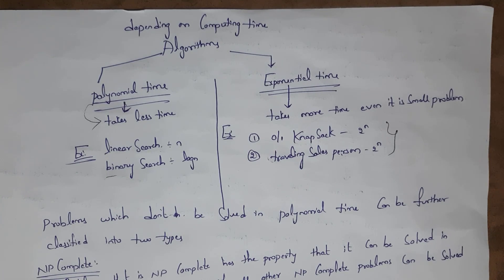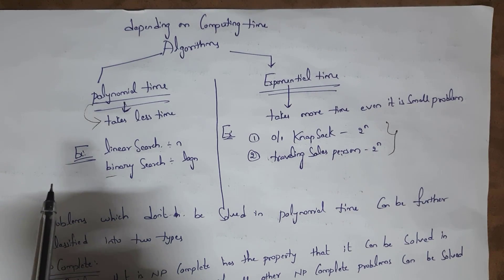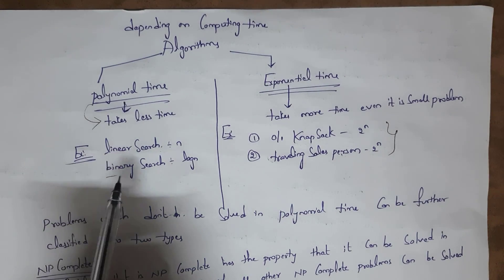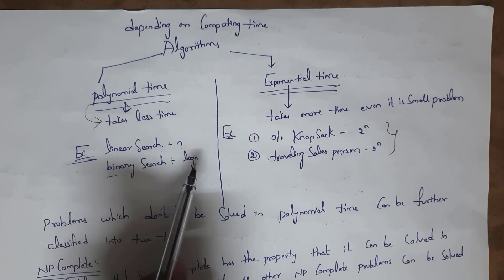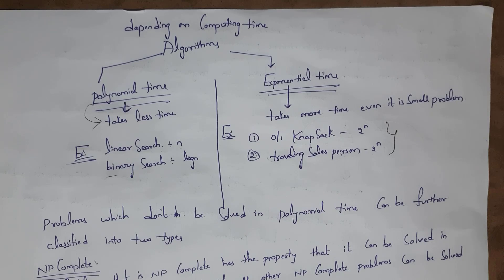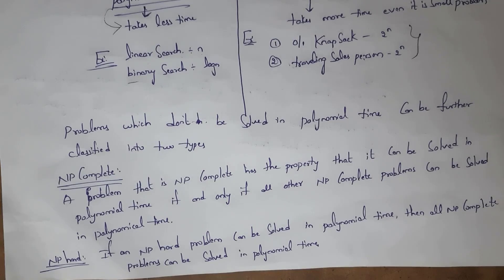Depending upon computing time, we divide algorithms into two categories: polynomial time and exponential time. Algorithms which take less time to complete are polynomial time; those that take more time are exponential time. Examples of polynomial time algorithms are linear search (O(n)) and binary search (O(log n)). Examples of exponential time algorithms are the 0/1 knapsack problem and the traveling salesperson problem, with time complexity of O(2^n).